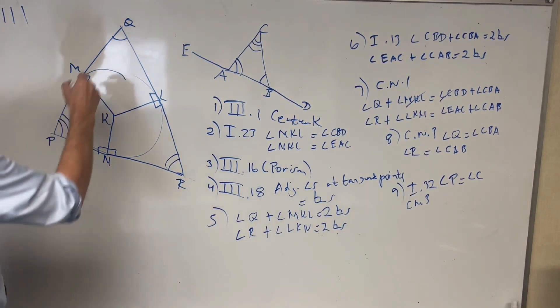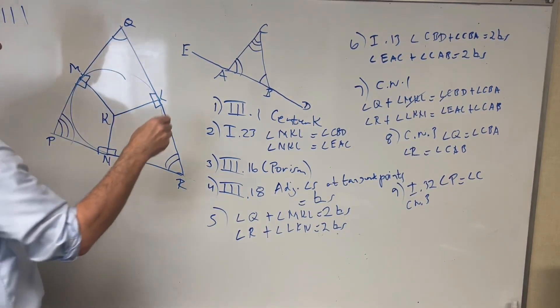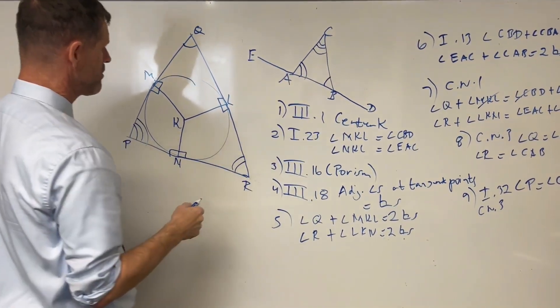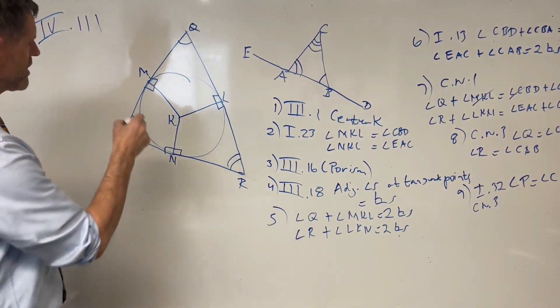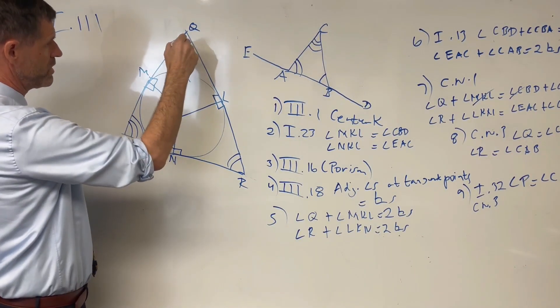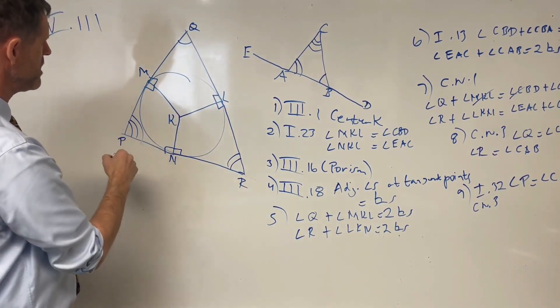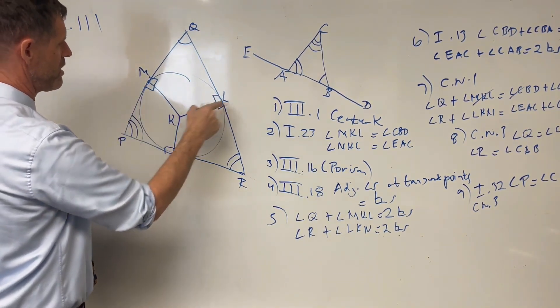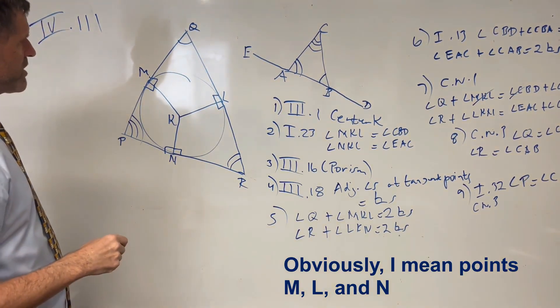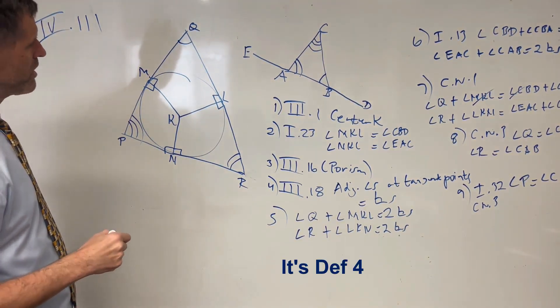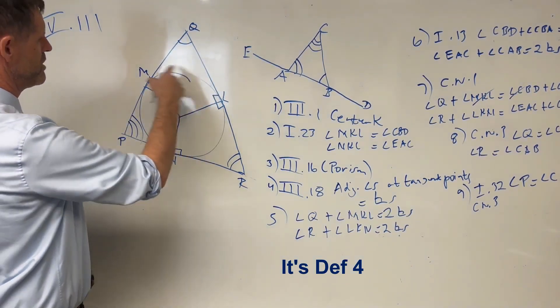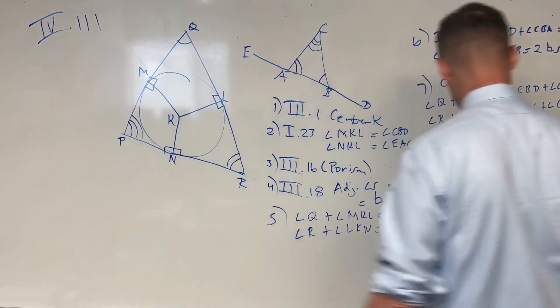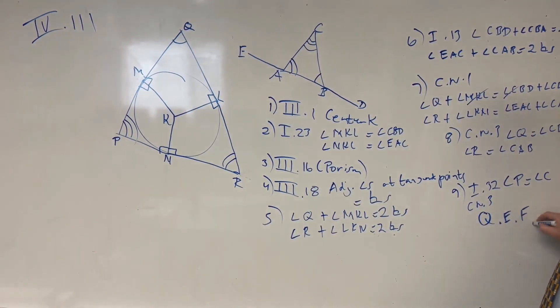And now, we've got this triangle QPR equiangular with the triangle BCA, and we showed earlier that the sides of the triangle PQ, QR, and RP, the sides are respectively tangent at points M, L, and K, which means, by definition five of book four, that the triangle has been circumscribed about the circle. Q.E.D.